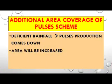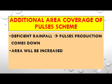Additional Area Coverage of Pulses Scheme: When rainfall becomes deficient, the production of pulses comes down. So the government introduced a scheme to increase the area under pulse production.